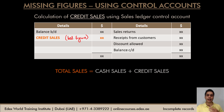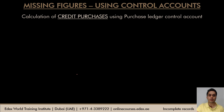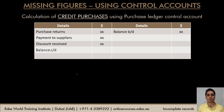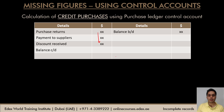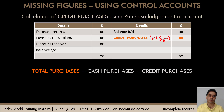Using the same logic, we arrive at credit purchases using the purchase ledger control account. Everything is in the format except credit purchases. Once we have all the numbers, we take a total on the debit side and use the difference between debit and credit to arrive at credit purchases as the balancing figure. Total purchases then equals cash purchases plus credit purchases, and with both sales and purchases known, we can calculate gross profit and net profit using the income statement.